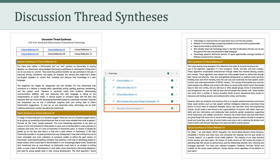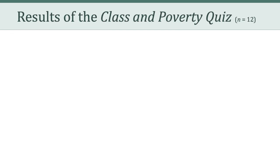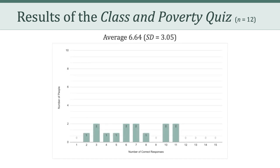Critical Reflection 5 asked you to connect a lot of dots, one of which was the Class and Poverty Quiz. So let's take a minute to review the results of that quiz. As you might recall, there were 15 questions, and as you can imagine, there were a lot of different scores. The class average based on 12 respondents was 6.64 out of 15, which was about 44%, and there was a fairly large standard deviation of over 3.0. So that's a pretty big spread.